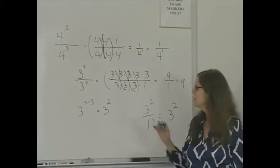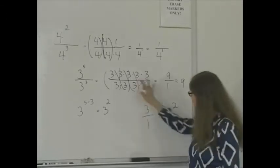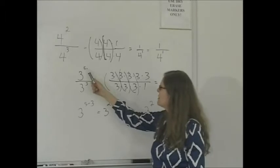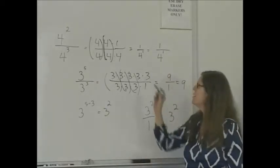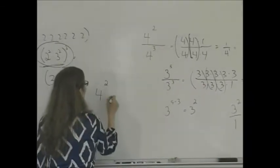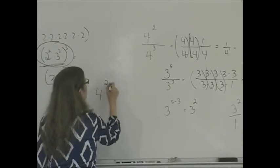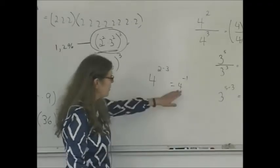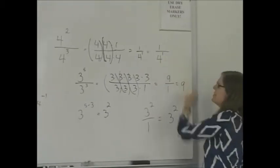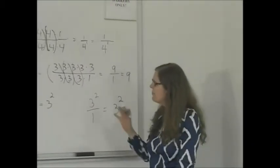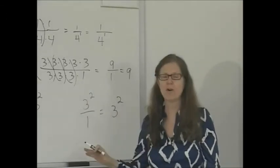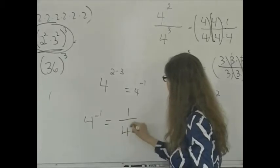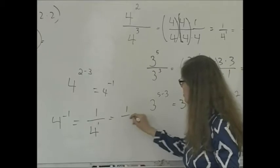And that is indeed how we can do a problem of this kind. If the numbers are big and you can't write it out intuitively, as long as the base is the same, you take the top exponent and subtract the bottom one, and that's the answer. What would have happened if we did that to the first problem? We would have had 4 to the second minus 3, which is equal to 4 to the negative 1. But what we got for our answer was 1 over 4 to the positive 1. So we have a definition: a negative exponent is the same thing as 1 over the same thing with a positive exponent. So 4 to the minus 1 is equal to 1 over 4 to the 1, which is just 1 over 4.